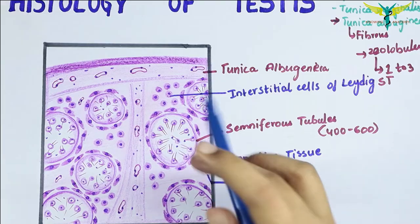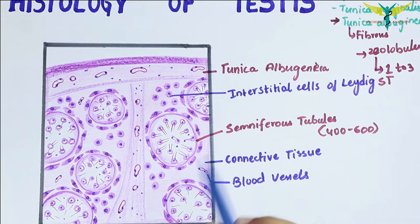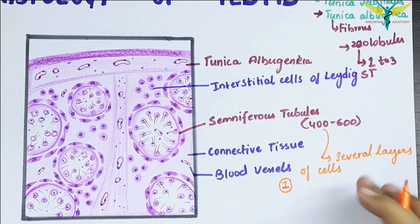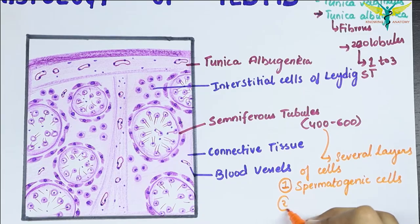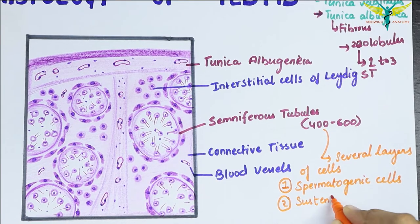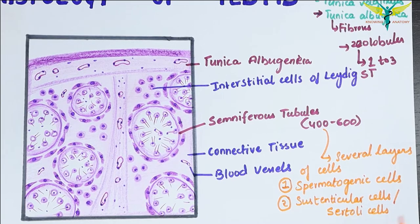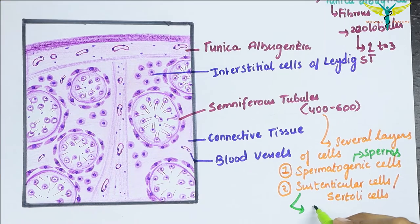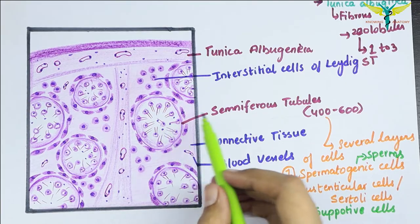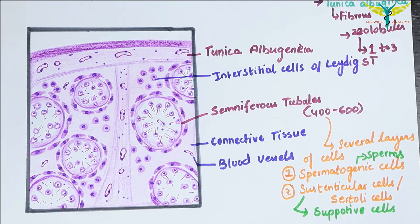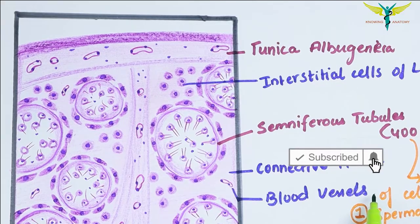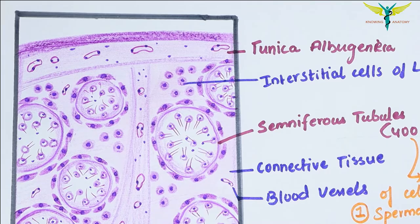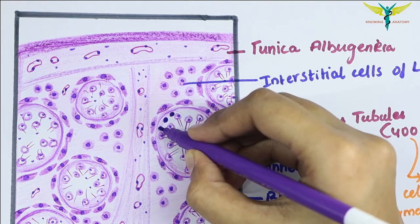Each seminiferous tubule is lined by several layers of cells, and the cells are of two types. The first type are the spermatogenic cells, which produce the spermatozoa. The second type are the sustenticular cells, also called Sertoli cells, which constitute the supportive function of the testis. If we look at a deep cross-section of one seminiferous tubule, we will note all these several types of cells — the spermatogenic and the sustenticular cells.